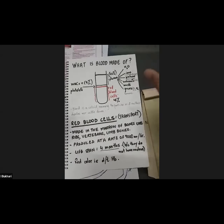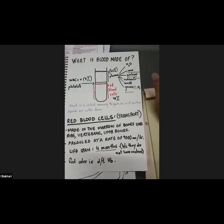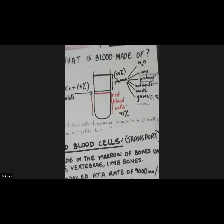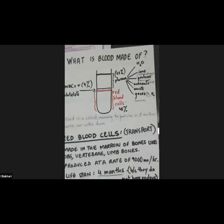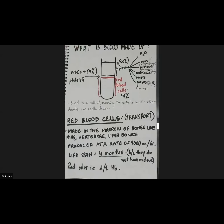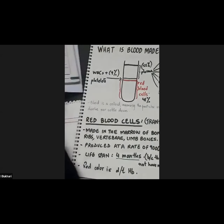Bismillahirrahmanirrahim. Just a little recap. Today, we're going to discuss the function of blood in transport, page 121 onwards. We are almost at the end of the chapter, so we have to discuss two things today: one is the role of blood for transport of various substances, and second is lymphatic circulation and lymphatic vessels.